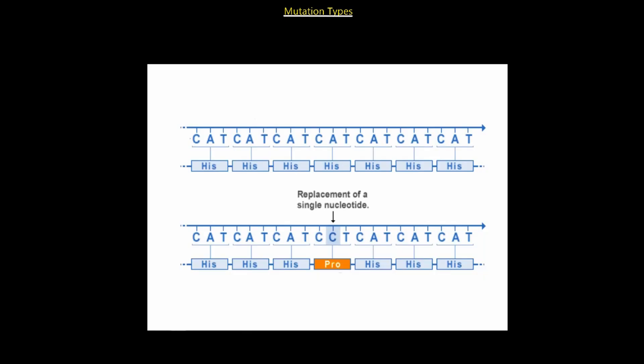Next, we're going to discuss mutation types. And typically, mutations occur during the process of gene expression. So during transcription, or DNA replication is another one, or translation is where mutations typically occur.